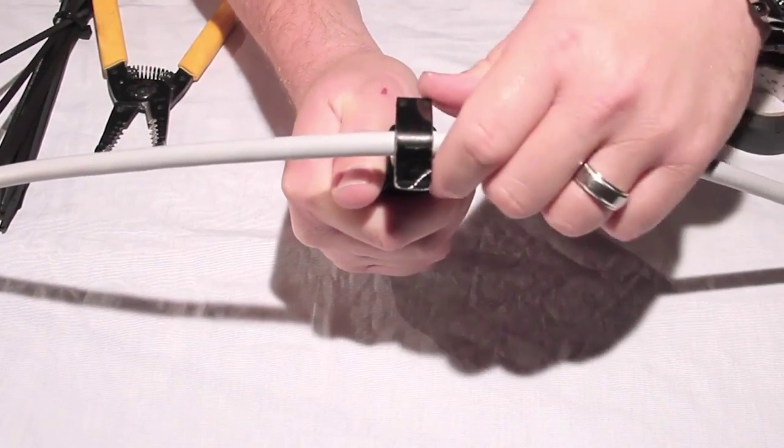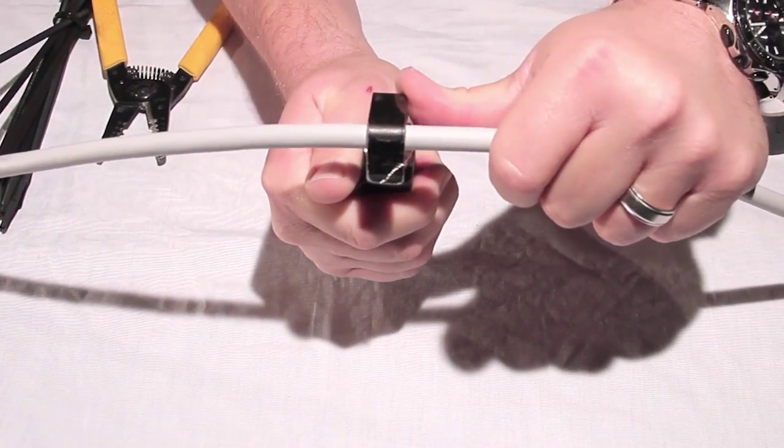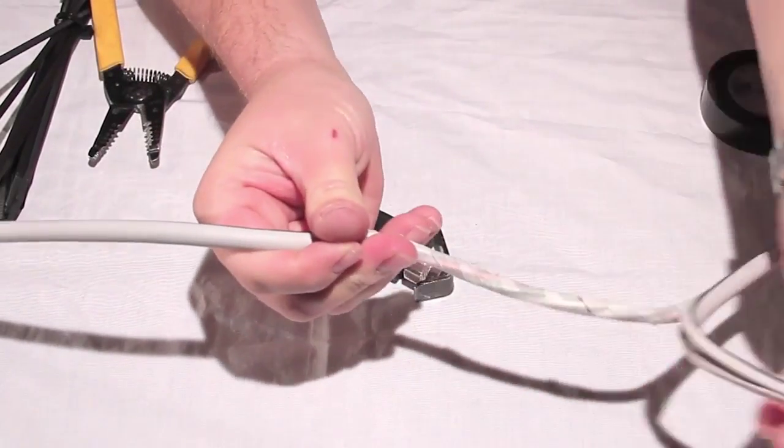Then, flip the lever to change the position of the blade and drag the stripper along the length of the loop to cut the jacket.